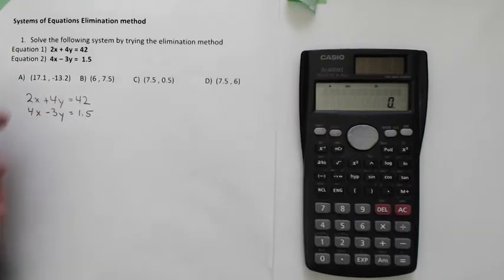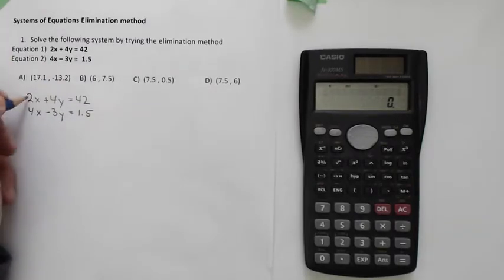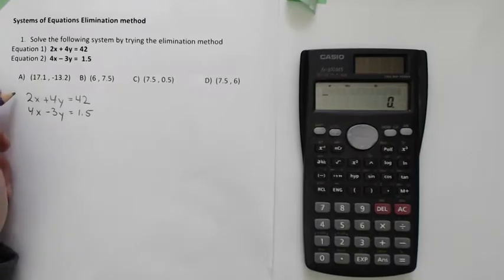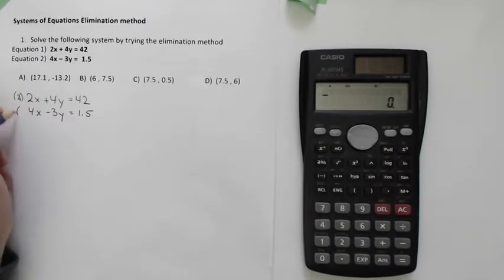But the way I show this, that you can never go wrong, is to multiply these two coefficients right in front. In other words, I'm going to multiply this whole equation over here by 4. And I'm going to multiply this whole equation over here by 2. So opposite of each other.